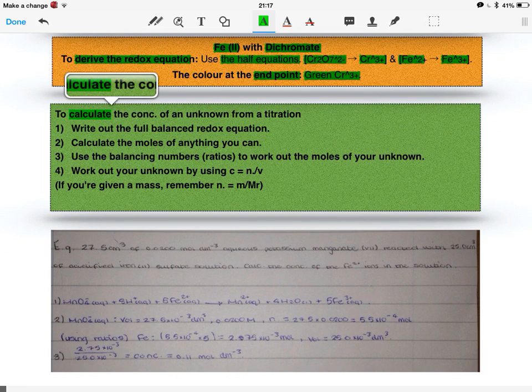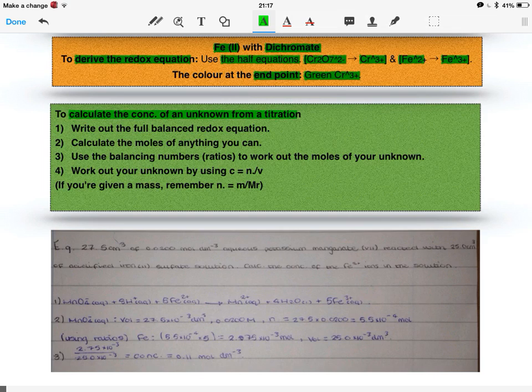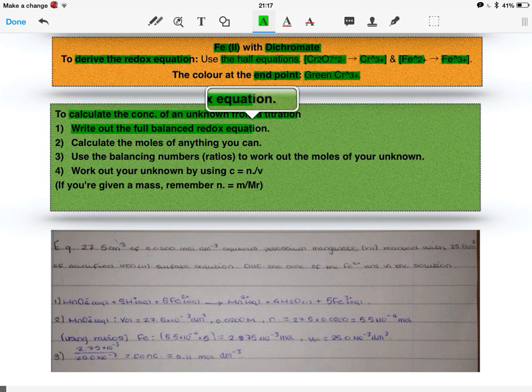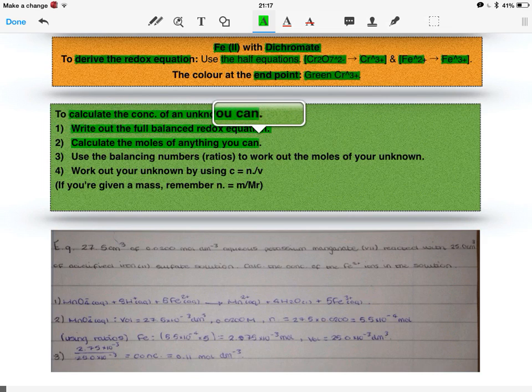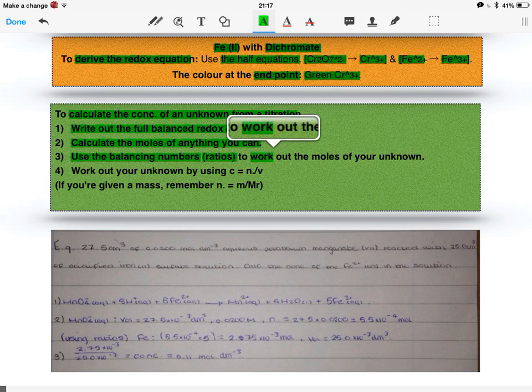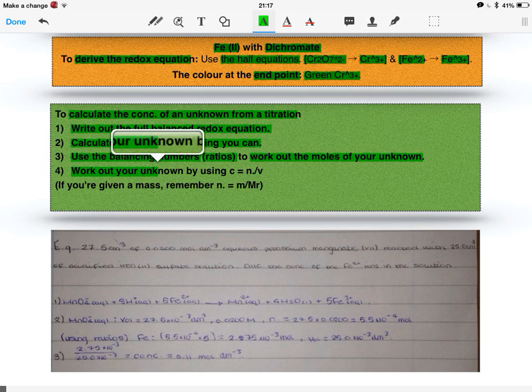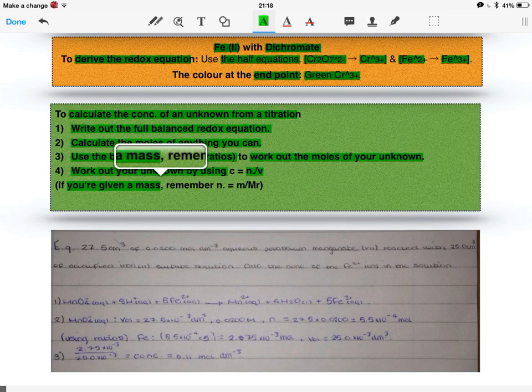To calculate the concentration, then, of the unknown from the titration, this is something that we should already know from AS, but the first thing you have to do is write out the full balanced redox equation. From this, then, you calculate the moles of anything you can. Once you've done this, you use balancing numbers, ratios, to work out the moles of your unknown. Then, you can work out, for example, the concentration of your unknown using concentration equals number of moles over volume. If you're given a mass in your question, just remember that number of moles equals mass over MR.